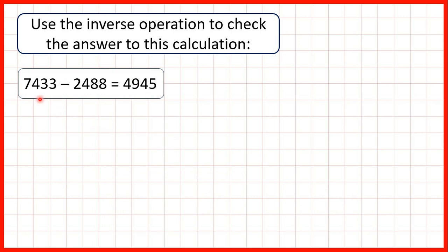Now let's do the same, but this time for 7,433 minus 2,488, and we can use the inverse to check whether that is equal to 4,945.